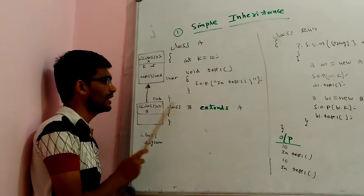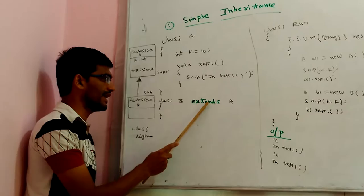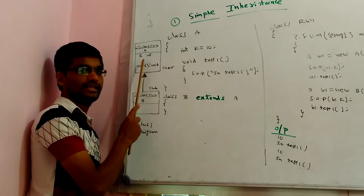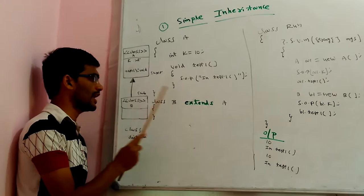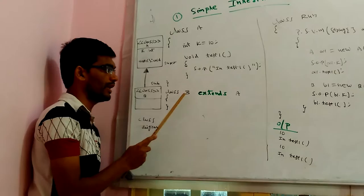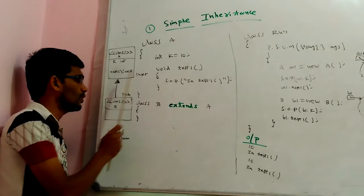For class B, we write 'class B extends A'. In Java, the keyword 'extends' (E-X-T-E-N-D-S) represents the inheritance arrow in the class diagram. So class B extends class A, meaning whatever class A has — the variable K and method test1 — can now be used by class B. Since class B has no variables or methods of its own, just the extends declaration is sufficient. This is the equivalent Java code for the class diagram.